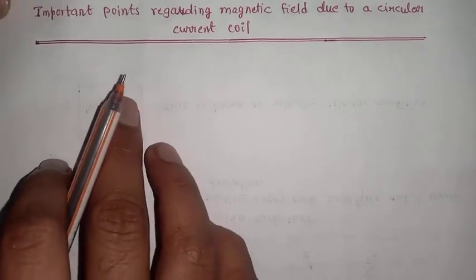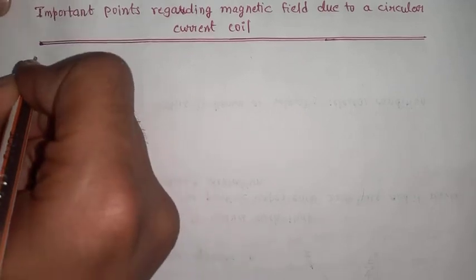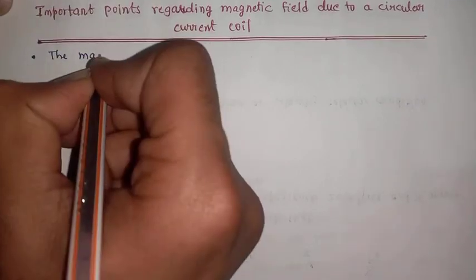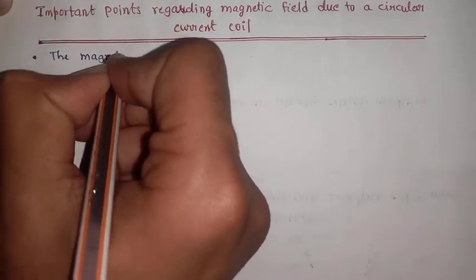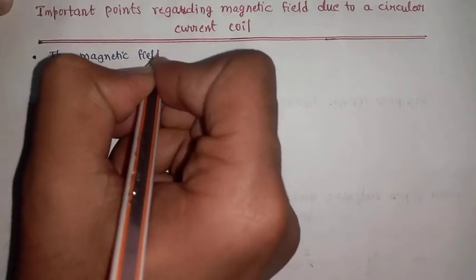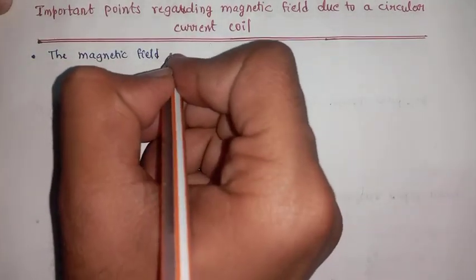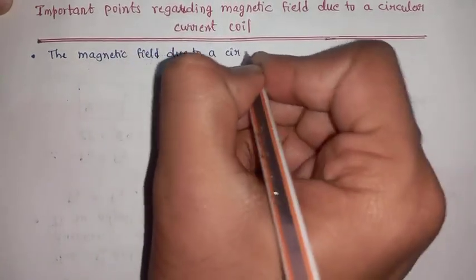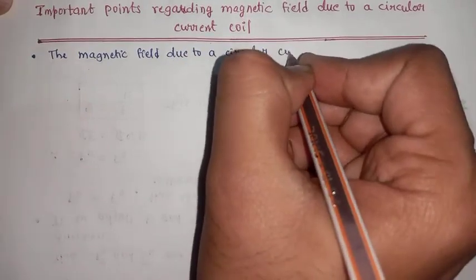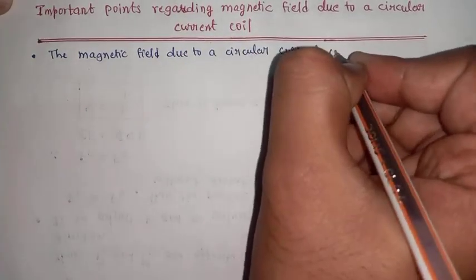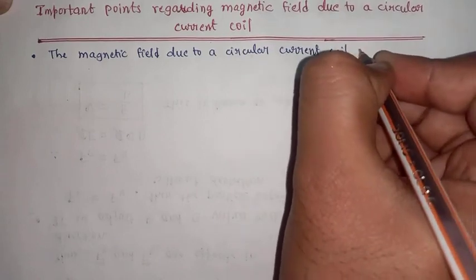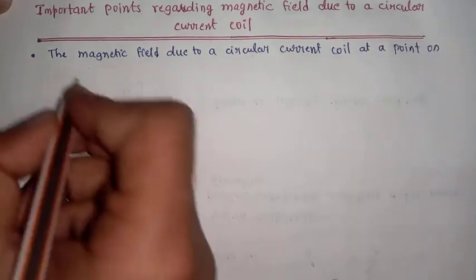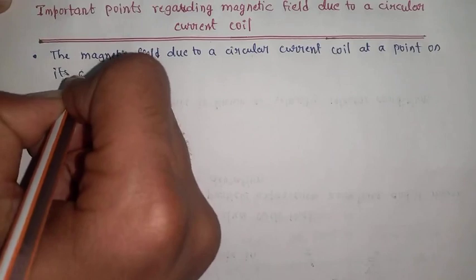The magnetic field due to a circular coil — the magnetic field due to a circular current-carrying coil at a point on its axis.